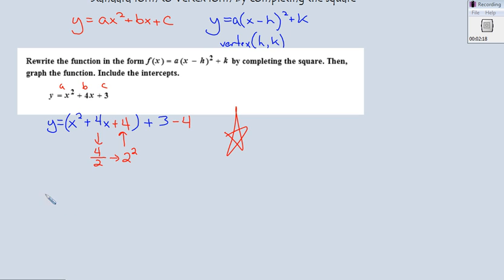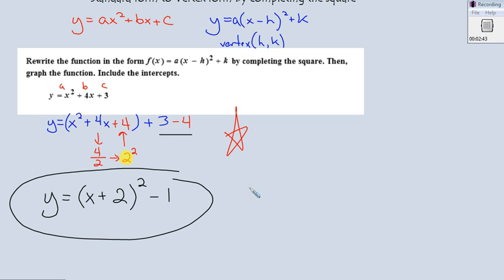Last step, y equals. Remember, vertex form looks like this, right? You have x. This guy right here is where you take this number right here, that half of that b term. You take that number right there. Since it's positive, you say plus 2. And then on the very end, you've got 3 minus 4, which is negative 1. And there you have your equation in vertex form.